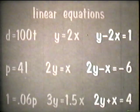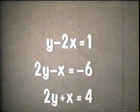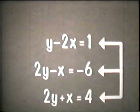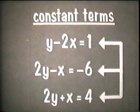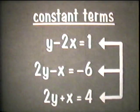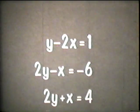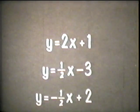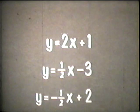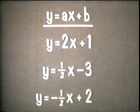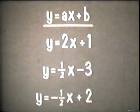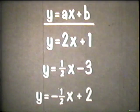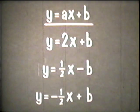Notice that some linear equations include third terms that do not have variables. We may call these constant terms — in a given equation, their values do not change. Each of these equations may be expressed in the general form for linear equations. This general form is written y equals ax plus b, where a stands for the coefficient of x and b stands for the third or constant term.